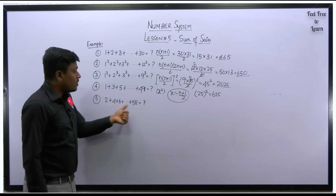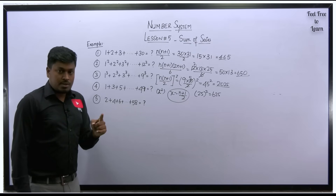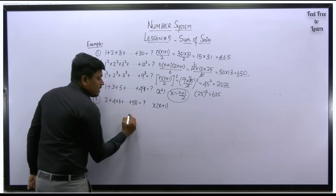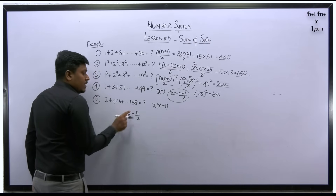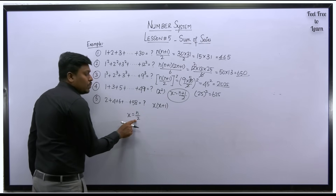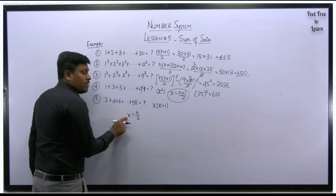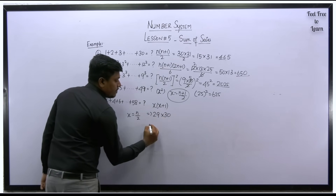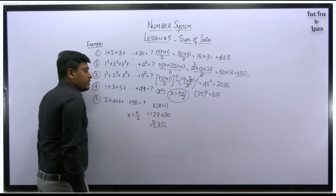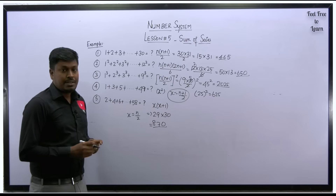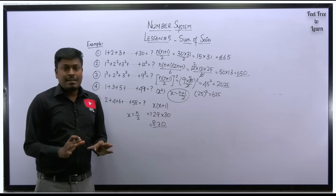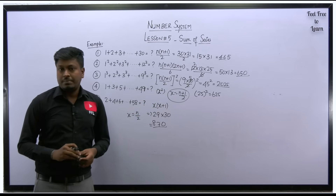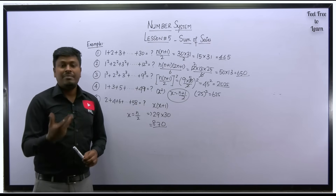Question 5: 2, 4, 6, 8 — it's model 2, category 2, even numbers. Formula: x into x plus 1, where x equals n by 2. So n equals 58; 58 by 2 equals 29. So x equals 29, and 29 into 30 equals 870. So 870 is the total sum of series for question 5.